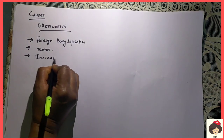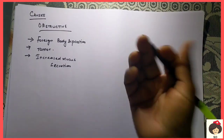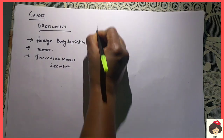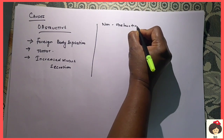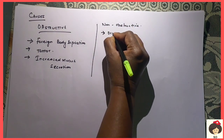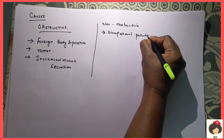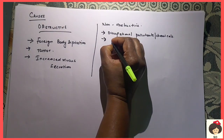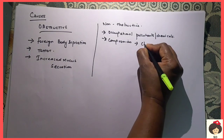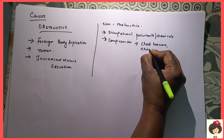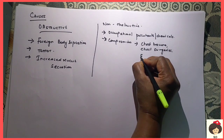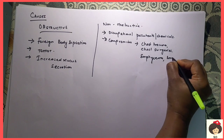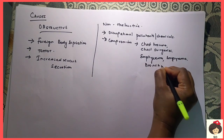And next is increased mucus secretions. When there is more mucus secretion, mucus will accumulate inside the alveolar glands and obstruct the air from coming inside, so inflation of the alveoli will not take place during inspiration. Non-obstructive causes can be due to any occupational pollutants or chemicals, and it can be due to any compression occurring because of chest trauma, chest surgeries, or disease conditions like emphysema or bronchiectasis — where fluid accumulates in the pleural cavity.